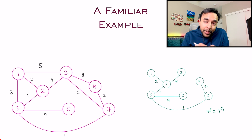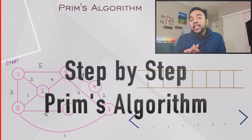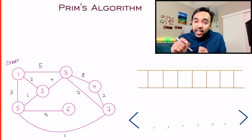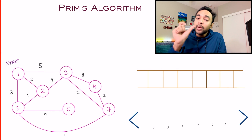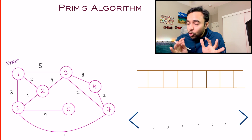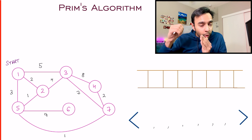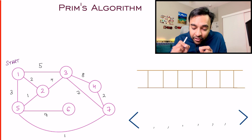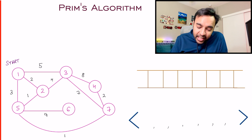This is where Prim's algorithm comes in. Prim's algorithm applies on a weighted graph and helps you find the minimum spanning tree using a greedy approach. Don't be scared by it — it is really simple. We will go step by step, and then you will see how easily we can derive the minimum spanning tree.